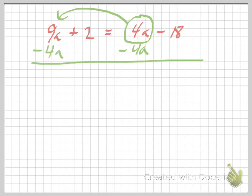Look what happens when I do this. 4a minus 4a goes away perfectly. You get negative 18. Over on the left side, 9a minus 4a equals 5a plus 2. And now doesn't that look just like all the other equations that we've been doing all chapter?